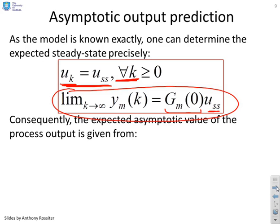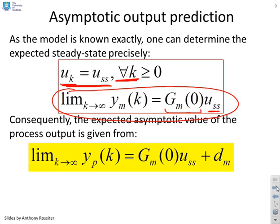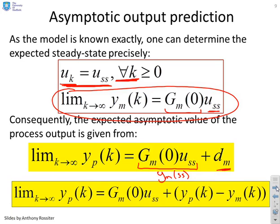And consequently, the expected asymptotic value of the process output must be given by, and you'll notice here, this is simply YM. I'll put SS for steady state, and I'm adding on my DM. And therefore, given I know what DM is, I can just add that in here. And you'll see I've got a very precise equation which gives me the expected asymptotic process output, which is based upon the model, which I know exactly, and my measurement. And that gives me an unbiased estimate of the steady state.